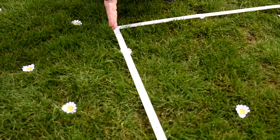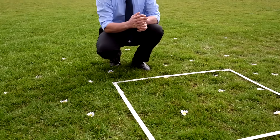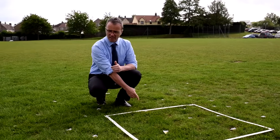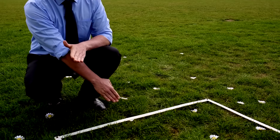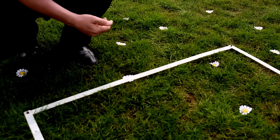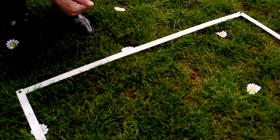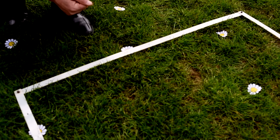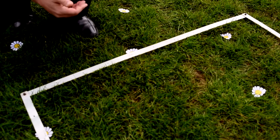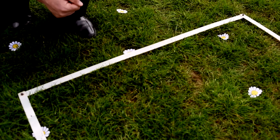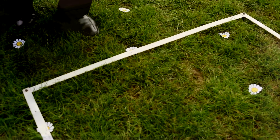So that means there are six flowers in this quadrat. We would not count this daisy here because it is not over half in the quadrat, so it does not count. Even if it is partially covered by the quadrat, it does not count unless at least half of that organism is within our one meter squared area.